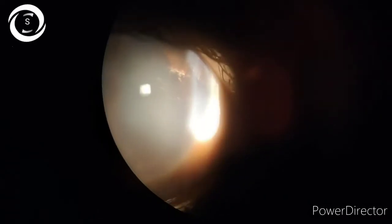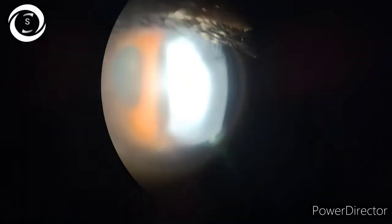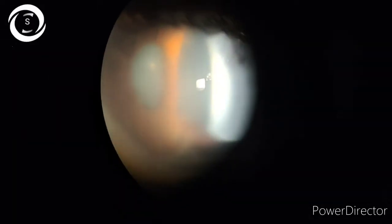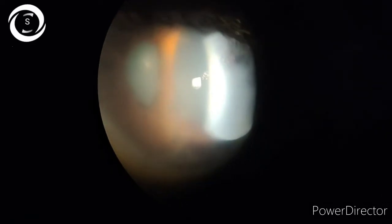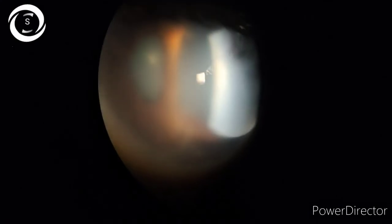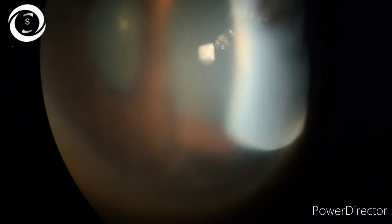Iridocorneal endothelial syndrome. Now what is ICE syndrome? It is a unilateral condition that involves an irregular corneal endothelium that leads to corneal edema, iris atrophy, and secondary angle closure glaucoma. Now it has three variants.